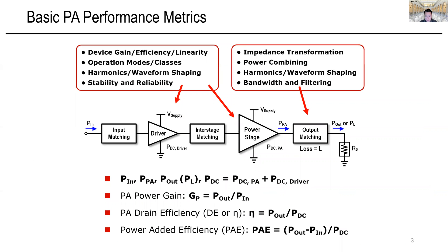This talk starts with the basic power amplifier performance metrics, including different RF power values and DC power values. With those power metrics, we can define the PA power gain, drain efficiency, and power added efficiency. A schematic of a general two-stage power amplifier is shown here. In general, the PA design can be separated into the active circuit design and the passive network design. The active circuits need to deal with device performances, PA classes, waveform shaping, device stability, as well as reliability.